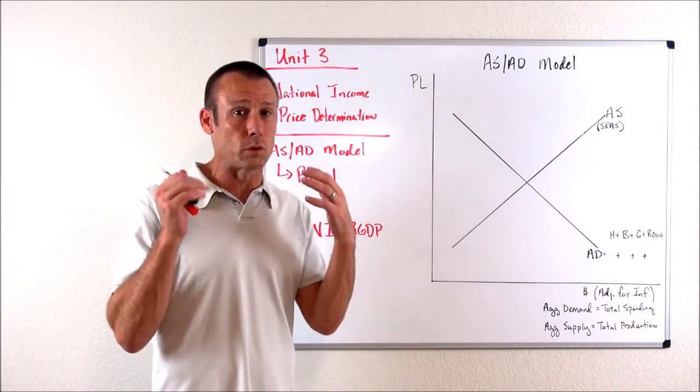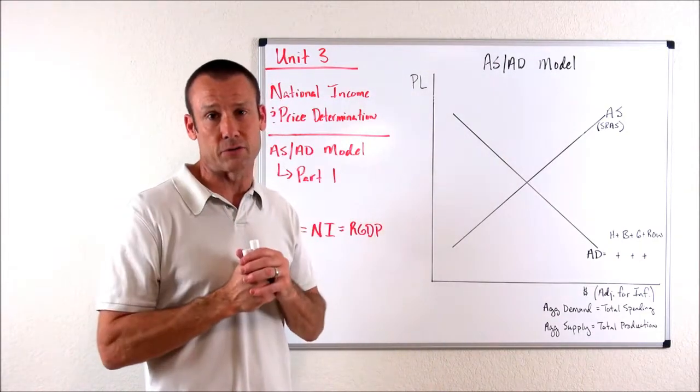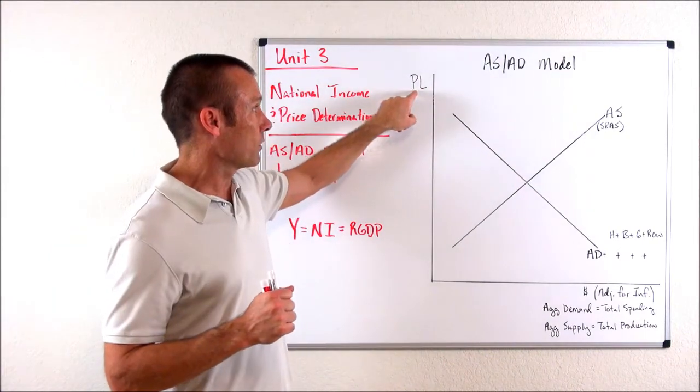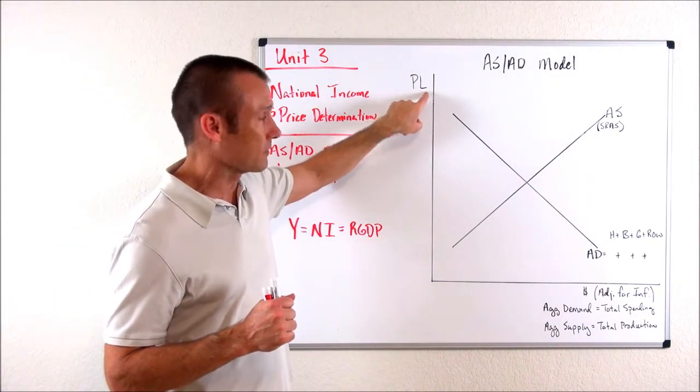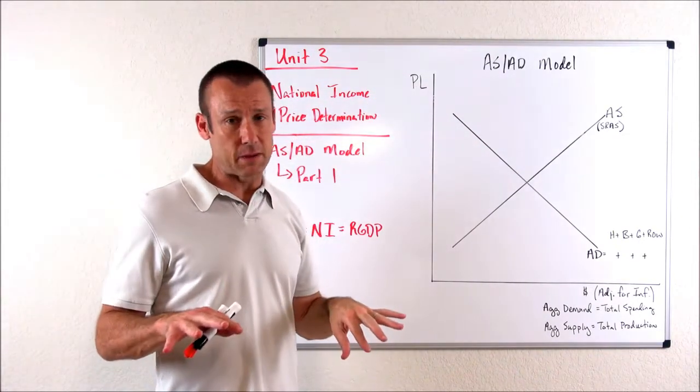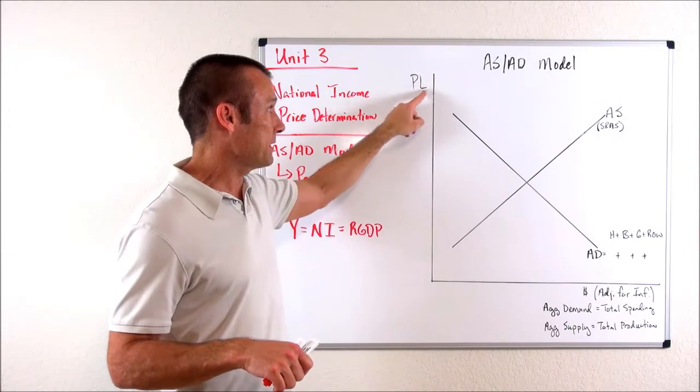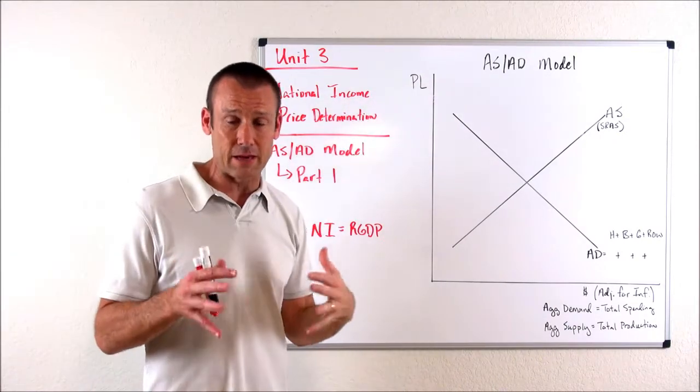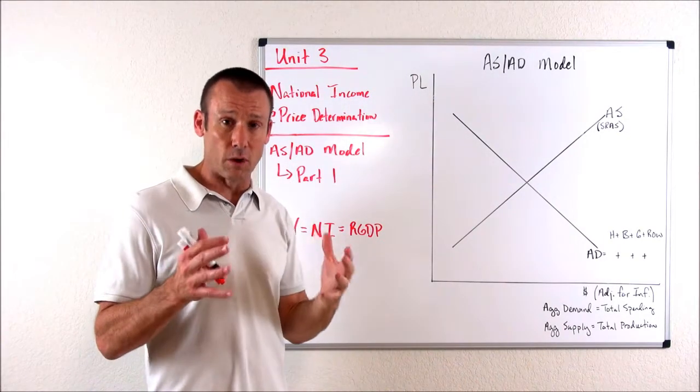All the way back in unit one, we were looking at tennis balls or tennis rackets or something like that. It is super important that you always remember to put price level. Krugman actually puts aggregate price level. It doesn't matter from an AP standpoint, whether you put APL or just PL. Price level is an aggregate measurement.